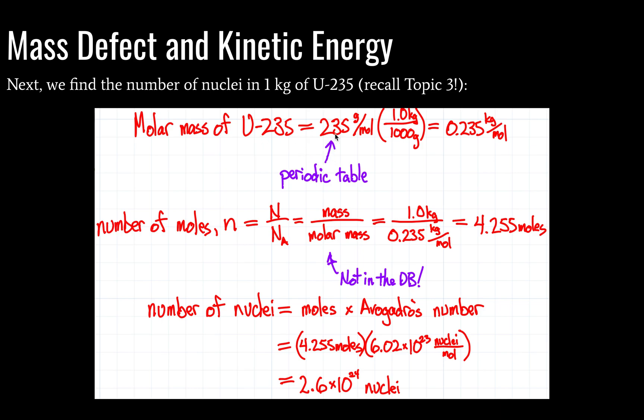You could also find a molar mass from a periodic table, as you see here. You just take the atomic mass number in the periodic table, and you use that for your molar mass. You just attach this unit, grams per mole. Note that grams per mole is typically the unit for a molar mass. So that's a problem for physicists. It's less of a problem for chemists. So we need to convert that to kilograms per mole, as I've done here.